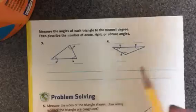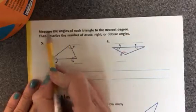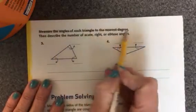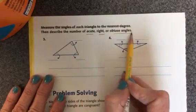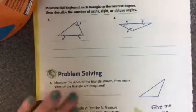This one says to measure the angles. We are not going to measure the angles. We're just going to tell if it's acute, right, or obtuse angles. Now, here's how we can know.